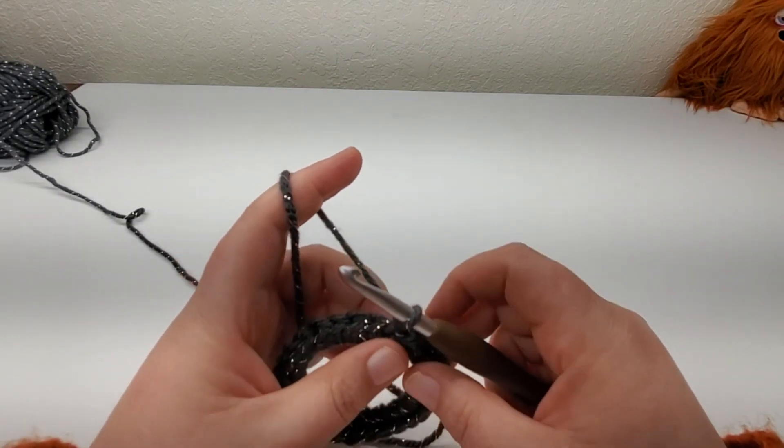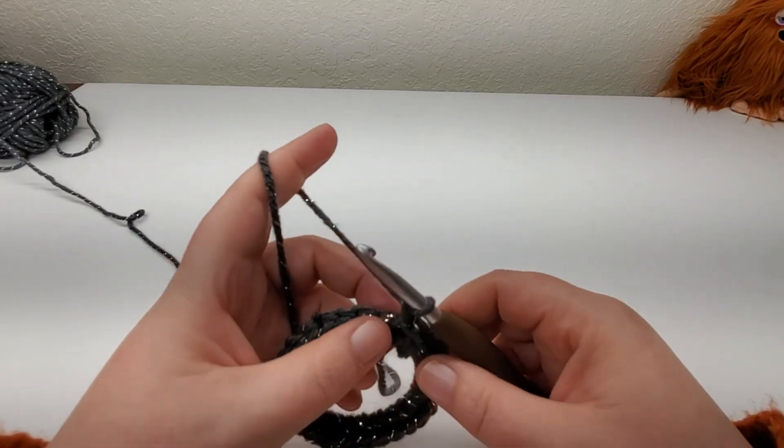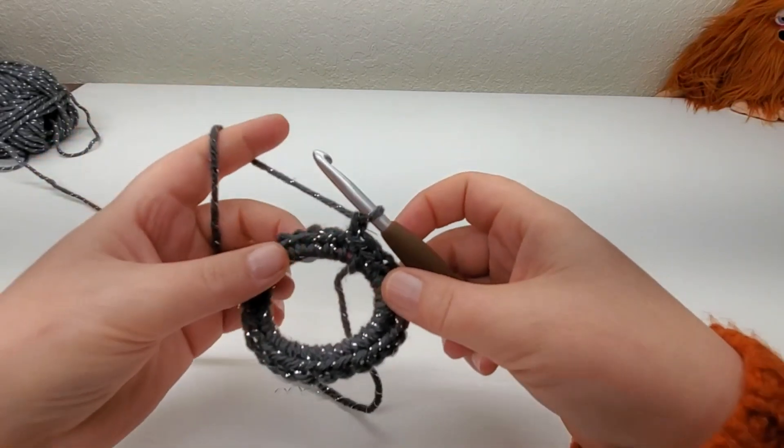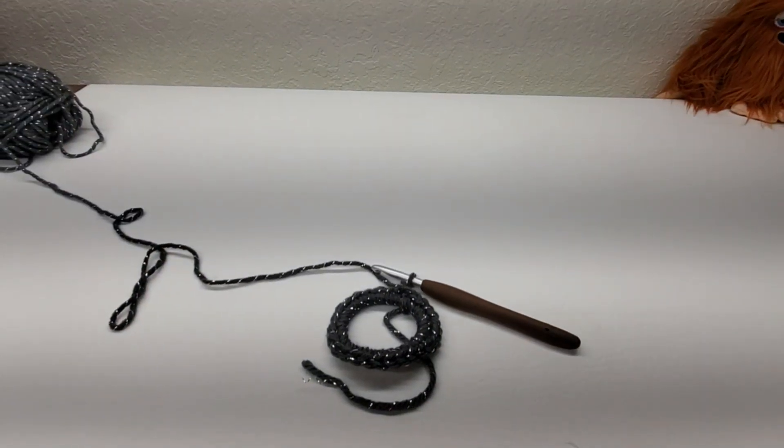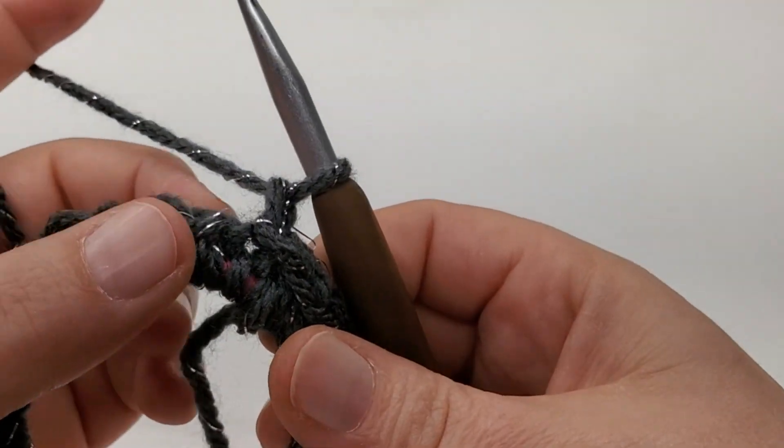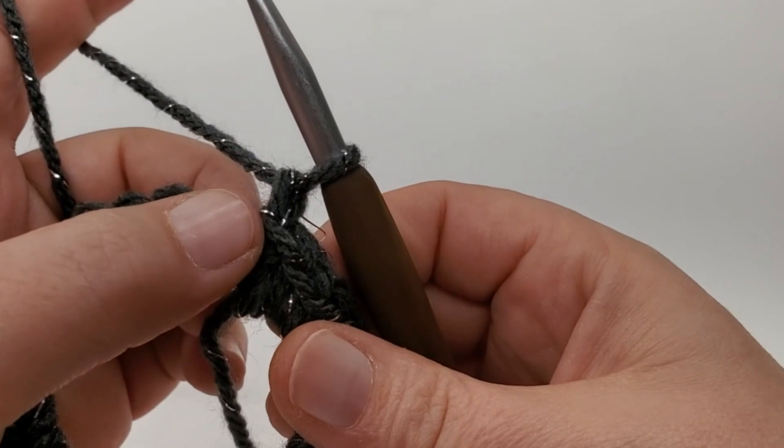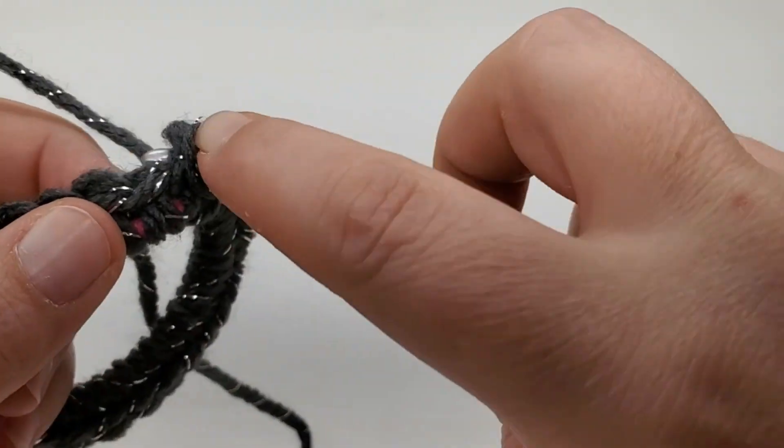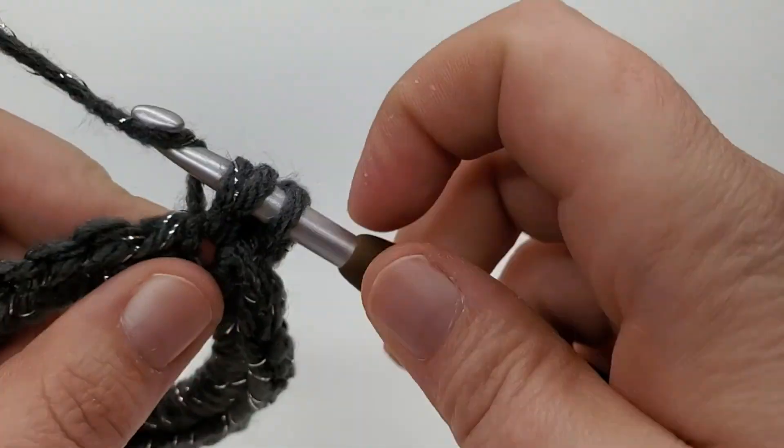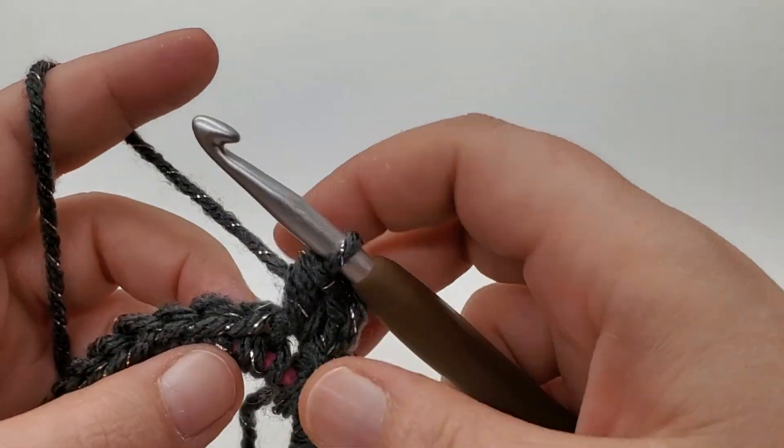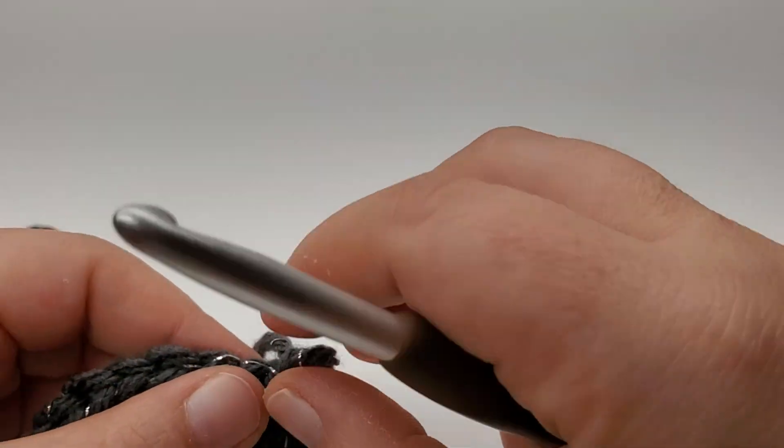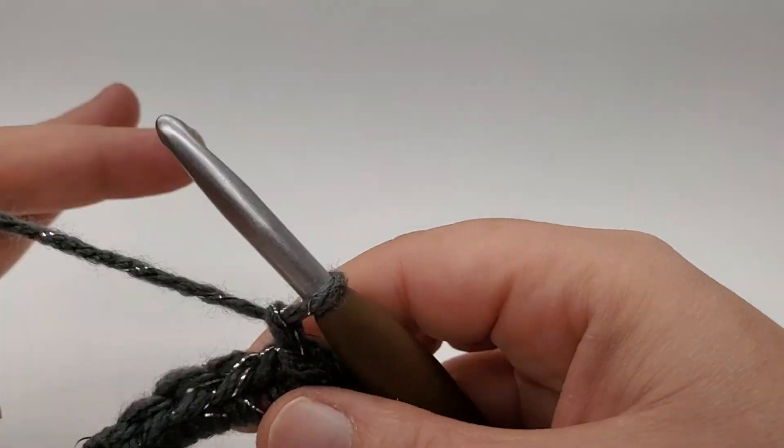So what we're going to do is we're going to go back into that single, the very first single crochet that we slip stitch to. Now we're going to work a half double back into the single crochet we slip stitched to. So we yarn over, and we're going to work two half doubles. So into the next one, I forgot to work back loop half doubles.